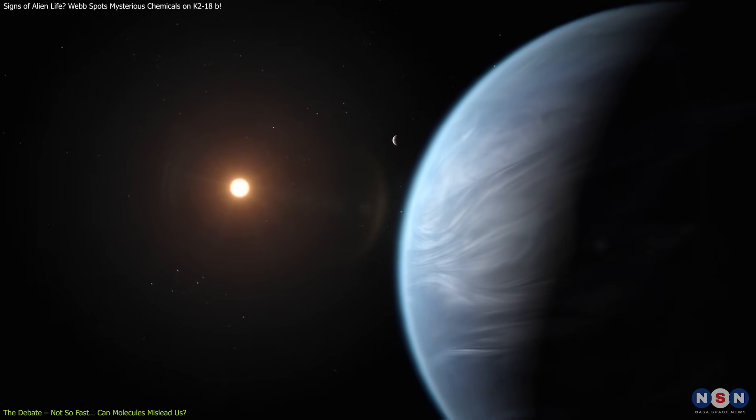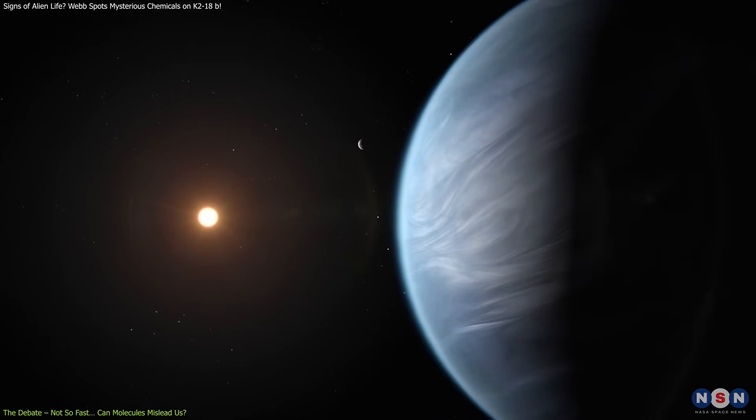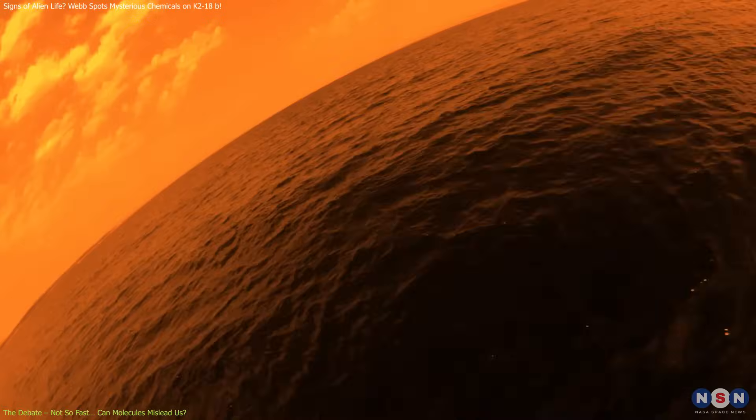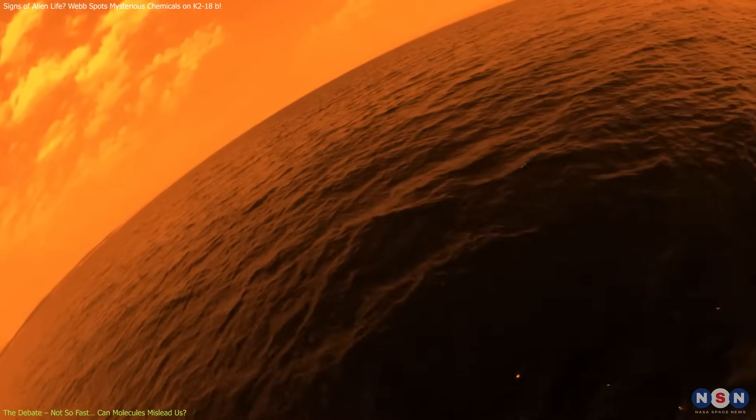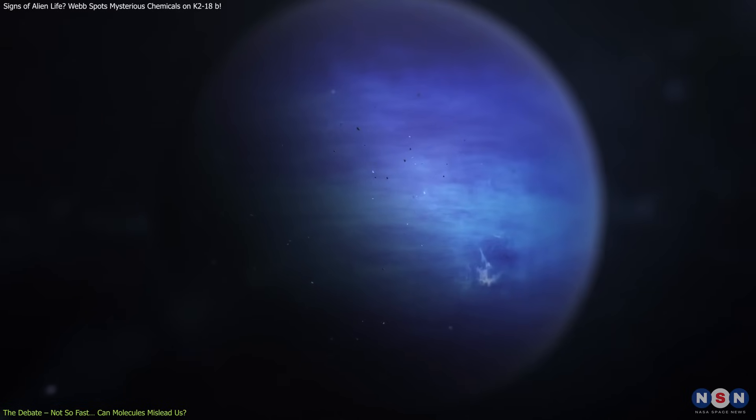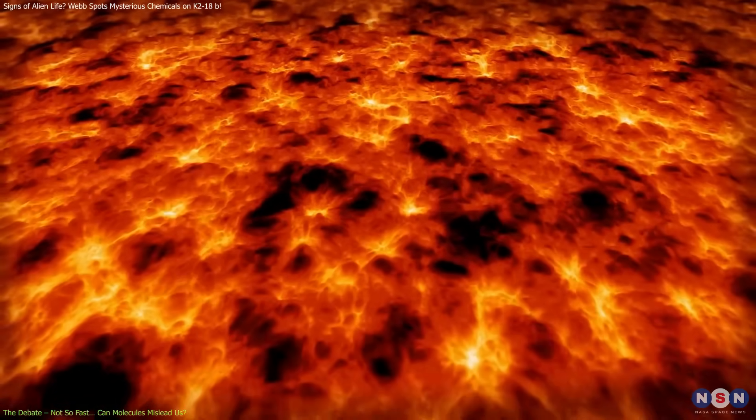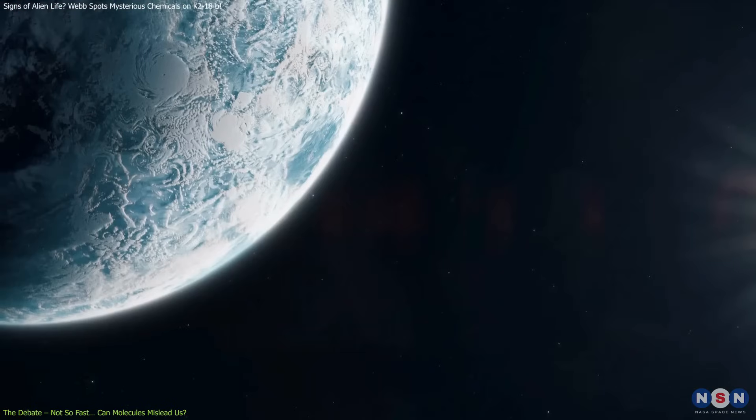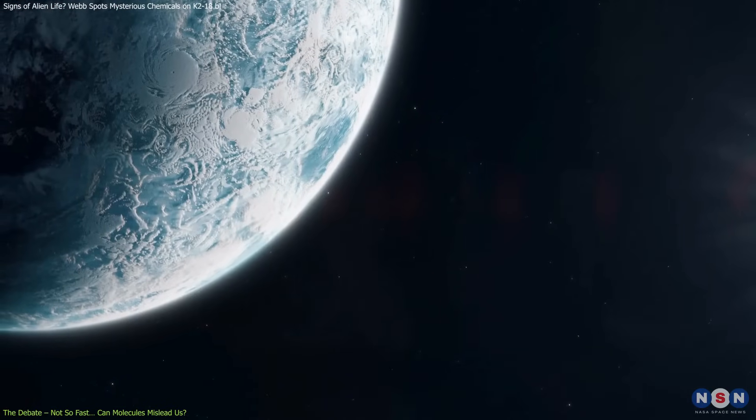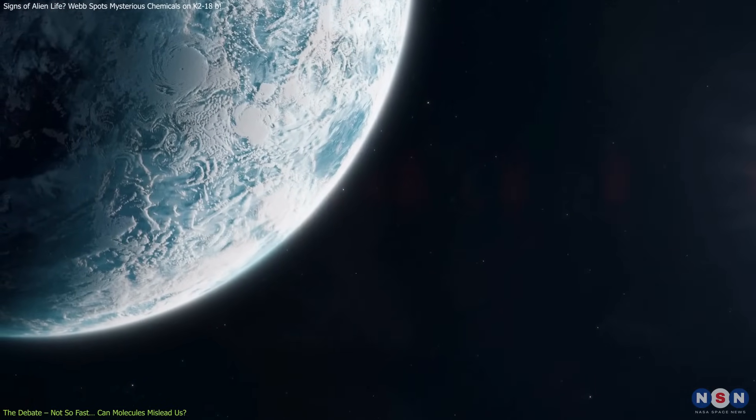There's also uncertainty surrounding K218b itself. While Madhusudan's team argues the planet could be an ocean world, some models suggest it might be more like a mini-Neptune with no solid surface, or even host oceans of magma instead of water. These conflicting interpretations make it hard to determine whether life could even exist there.